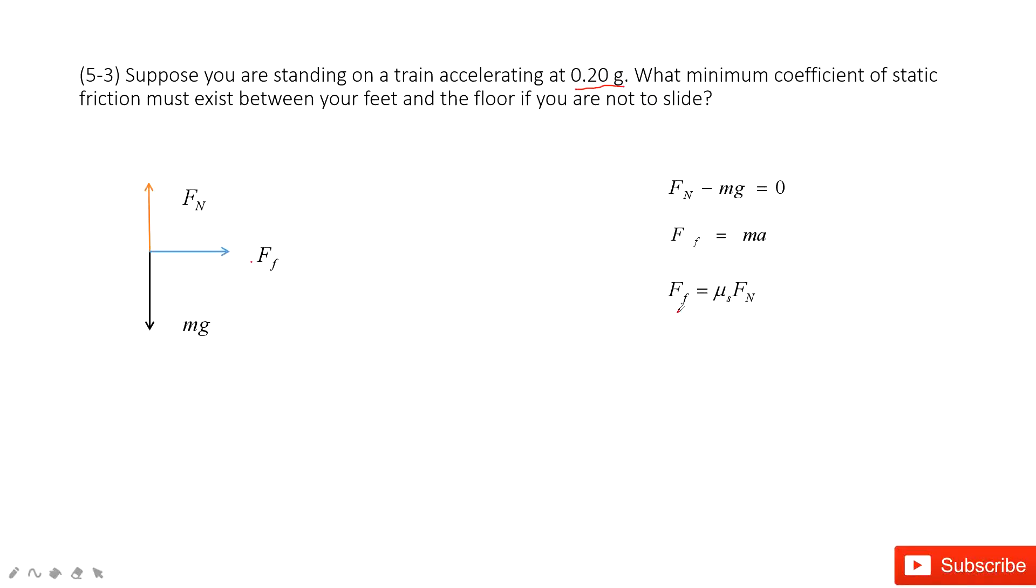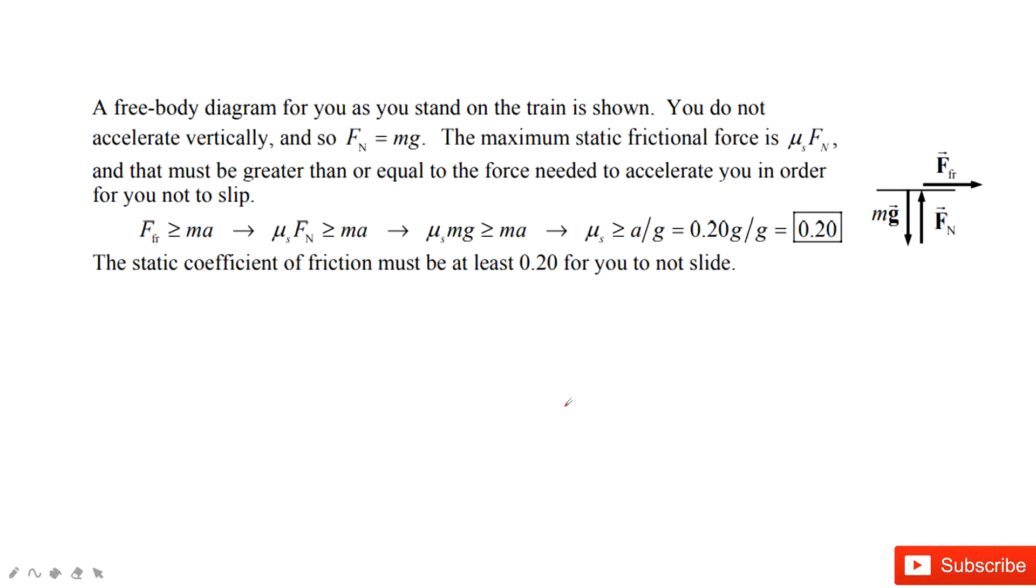And then, this is a friction. Static friction must be the coefficient of static friction μs times normal force. In this one, we input this quantity together. Required friction is μs mg equals mass times acceleration. Therefore, we consider in the boundary, in the limit, the μs static friction must equal to acceleration divided by g. And then, if we put the number inside, we find it is just 0.2.